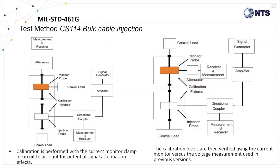The current monitoring clamp must be terminated into 50 ohms as well. Once that calibration is complete, the test levels are then verified by moving the measurement receiver to the current probe and terminating the far end of the coaxial loop into 50 ohms. The field levels or forward power recorded during the original calibration will be played back and verified that the correct injection current levels are received.